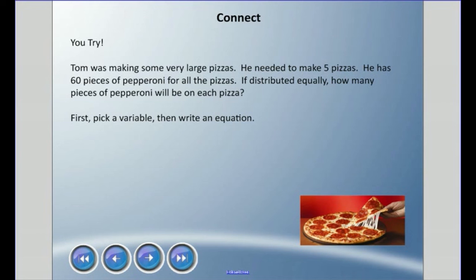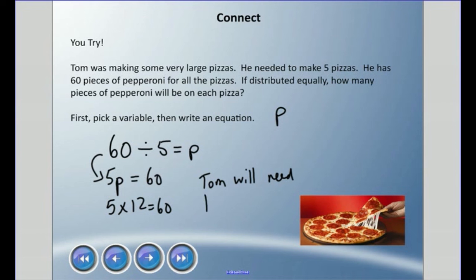Pizza, pepperoni, both are P, so P is our variable. He needs to make five pizzas and has 60 pieces of pepperoni. For me, I like to start here: 60, and he has five pizzas, so we've got to figure out what is going to go on each pizza. So 60 divided by 5. Now I could rewrite this if I'm not as good with division: P times 5, so 5P equals 60. So 5 times something equals 60. Well, I know that 5 times 12 equals 60. So Tom will need to use 12 pieces of pepperoni per pizza.